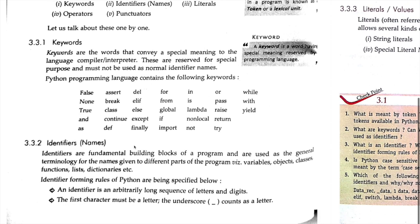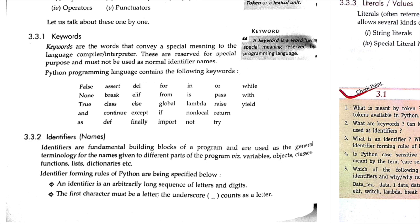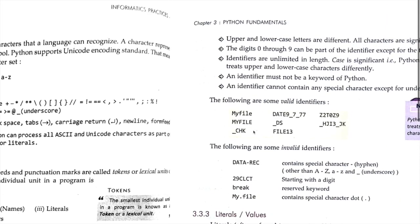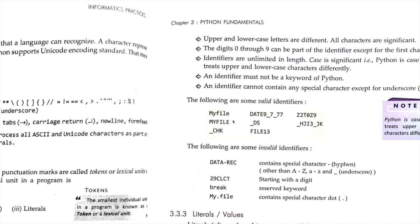Next, we'll be learning about identifiers. Identifiers are the fundamental building blocks of a program and are used as general terminology for the names given to different parts of the program. For example, a file named with a date like '097_77' — this is a valid identifier. Before writing any identifier we have to follow certain rules.